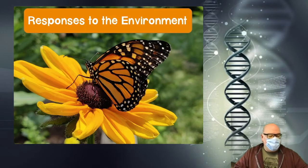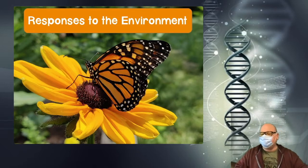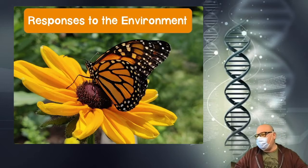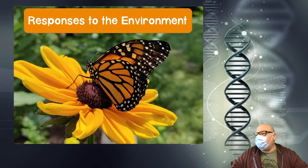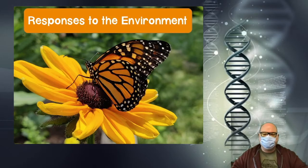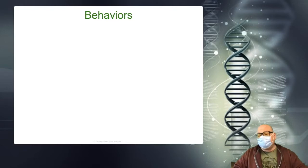Most life doesn't just move randomly or respond randomly. It reacts to the environment in some way. It's low on food, it does this. It's looking for a mate, it does this. It doesn't have enough water, it looks to get water this way or that way. So how these responses develop and why they develop is what we're going to talk about today. We call these behaviors, and all living things have some sorts of behaviors.